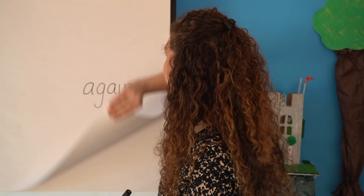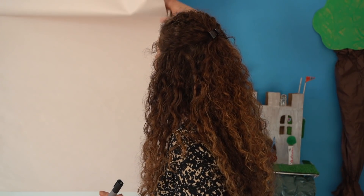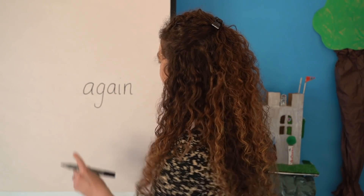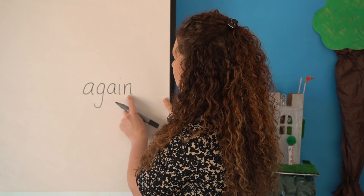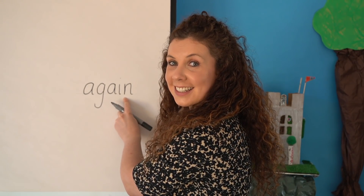Let's hide the word. It's time for you to have a go. Say the word. Say the sounds. And what's the tricky bit? The E is written with the letters AI. Write them down. Okay, let's check our spelling. Show me your spelling. Okay, let's have a look. A-G-AI-N. Again. Did you get it right?